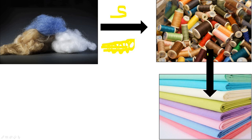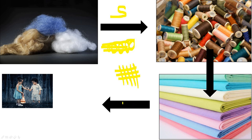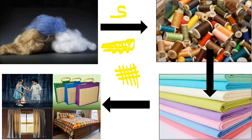Then yarns are converted into fabric by the process of weaving and knitting. Weaving is arranging yarns in horizontal and vertical fashion. Knitting is bunai. Yarns are converted into fabric and later fabrics are stitched to get clothes, bags, curtains, bedsheets, etc.